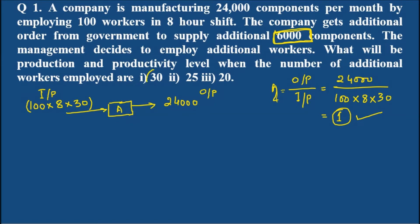Now let us consider the second case where there are two changes. 30 workers have been increased and there is also an additional demand of 6,000 components. You add here your 6,000 components and make the output. The new output will be 30,000. And what will be the new input? In the worker section you add 30. The amount of input in terms of man hours will be 130 multiplied by 8 and that is multiplied by 30. This is our new input and this is our new output.